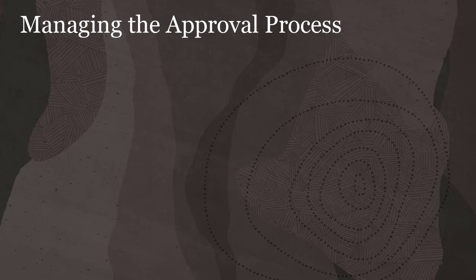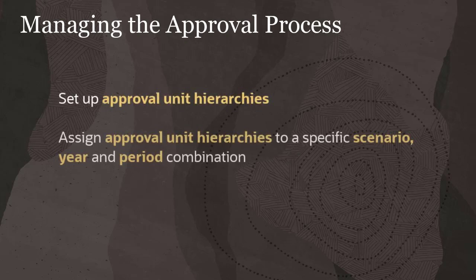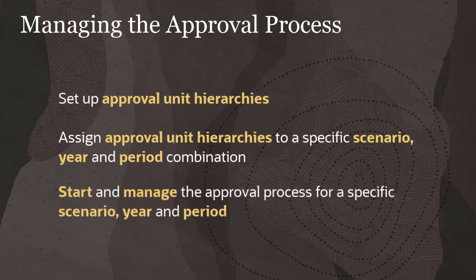To manage the approval process in Financial Consolidation and Close, you perform these tasks: set up approval unit hierarchies, assign approval unit hierarchies to a specific scenario, year, and period combination, and start and manage the approval process for a specific scenario, year, and period.